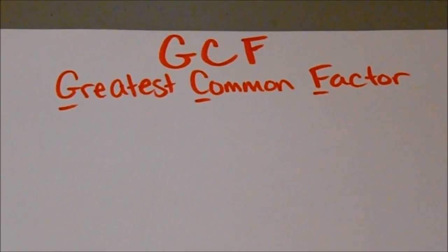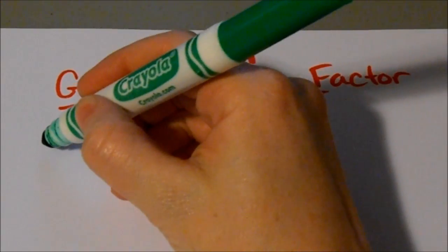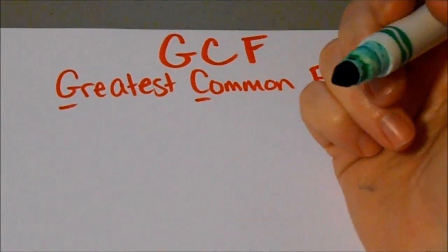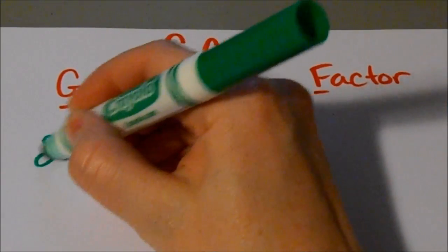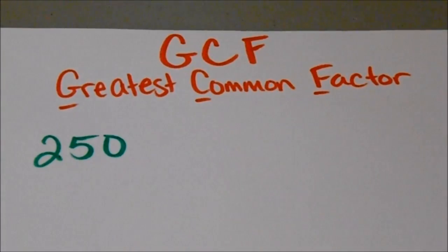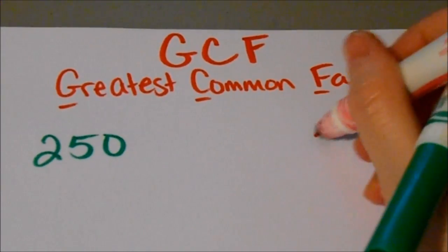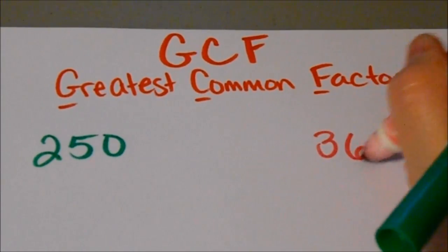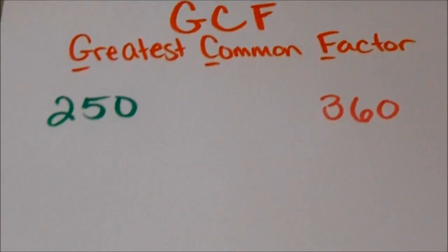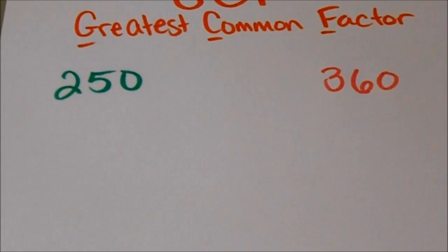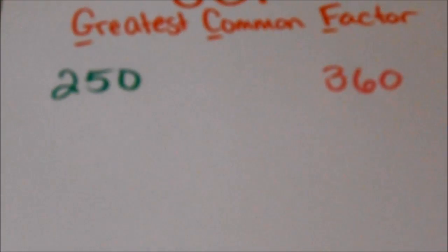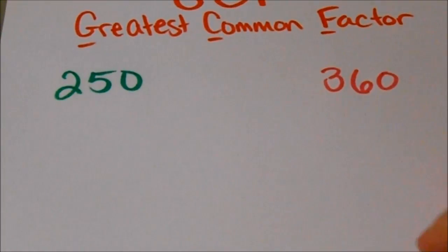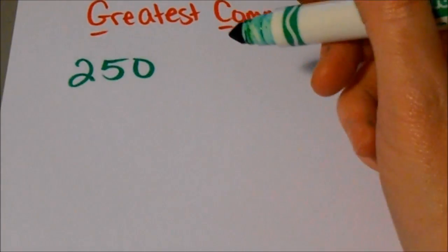I'm going to start with the same numbers that I used in some of my other videos. We're going to find the greatest common factor for 250 and 360. The first step I need to do is find the prime factors for each of these numbers, and I'm going to use a factor tree in order to do that.